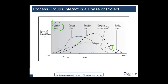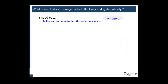What we are saying is that the level of interaction of different process groups would change as per the project or as per the timing in the project. But most of the time, at least three of them — planning, execution, and monitoring and controlling — would be visible or available mostly throughout the project. I can say at least 80% of the time you would see these three process groups in the project.